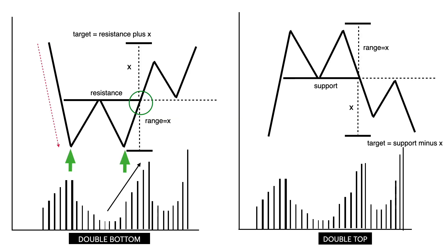In a double top pattern, the existing trend is an uptrend. It is made up of two consecutive peaks that are roughly equal with a moderate trough in between. The trend changes from bullish to bearish. The advance of the lows that form the second peak has low volume. The decline from the second peak sees an expansion in volume.